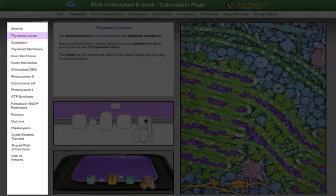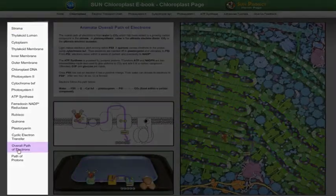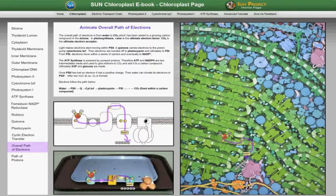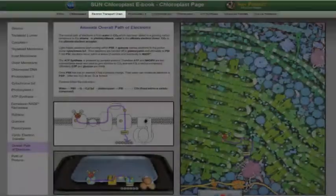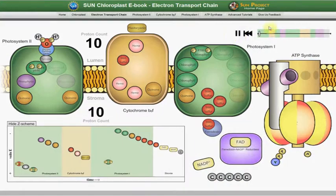Choices along the side also include animations such as the overall path of electrons. For a closer look at that path, you may select the electron transport chain page.